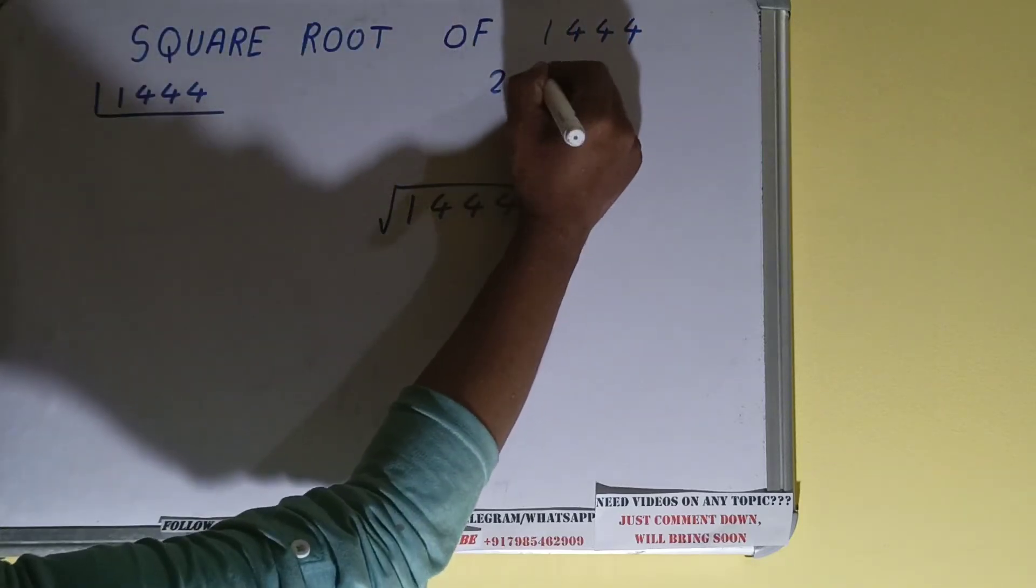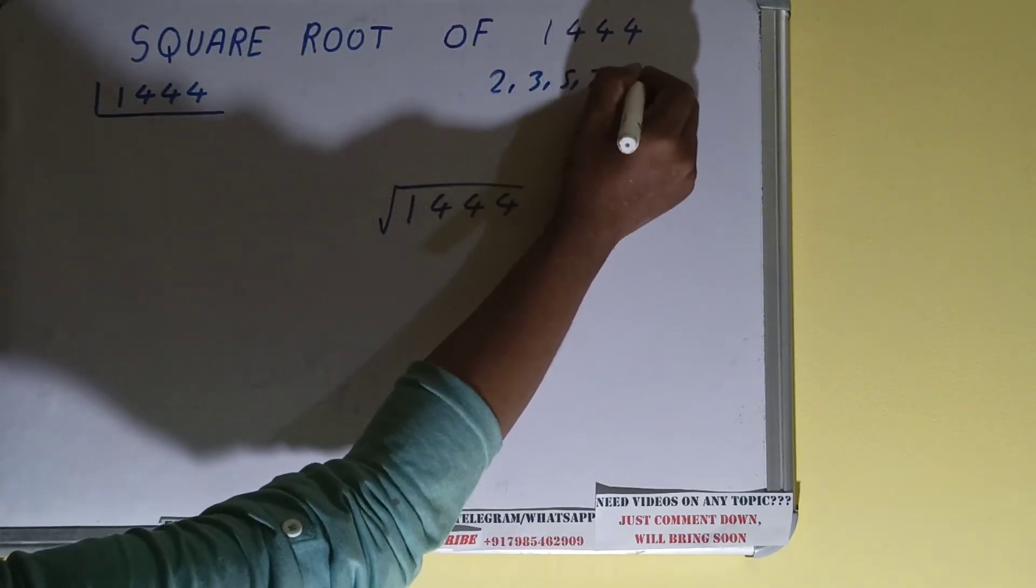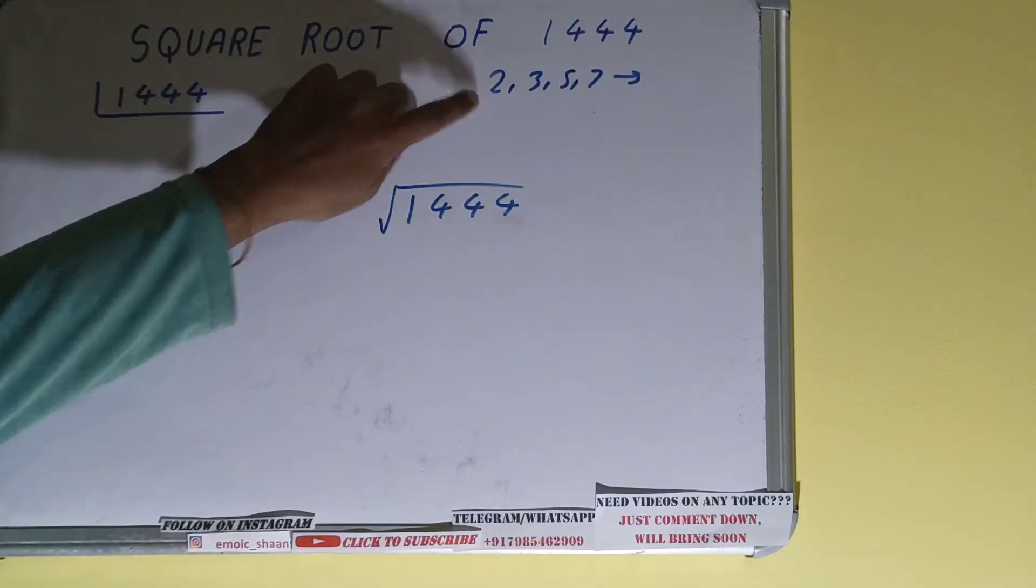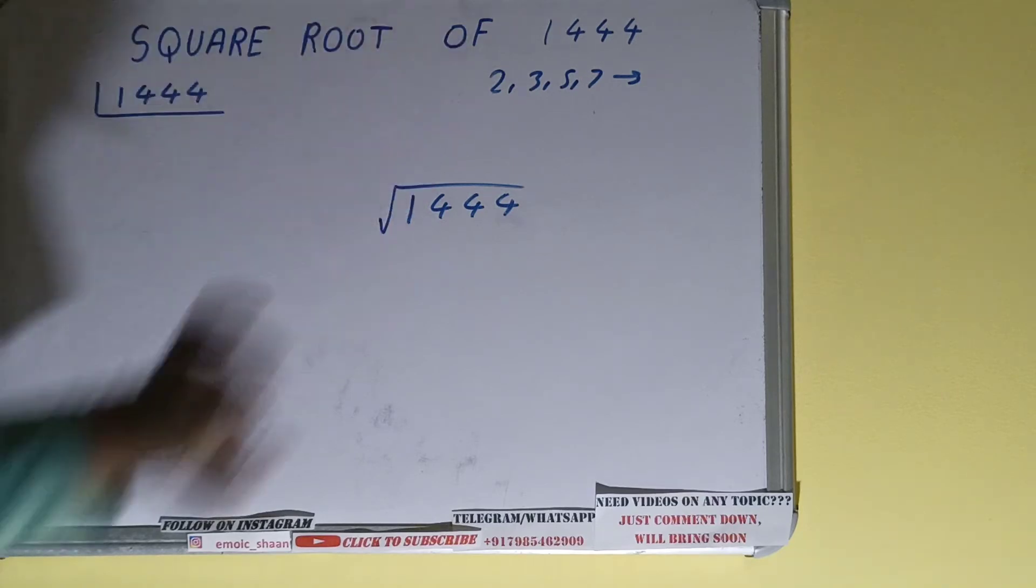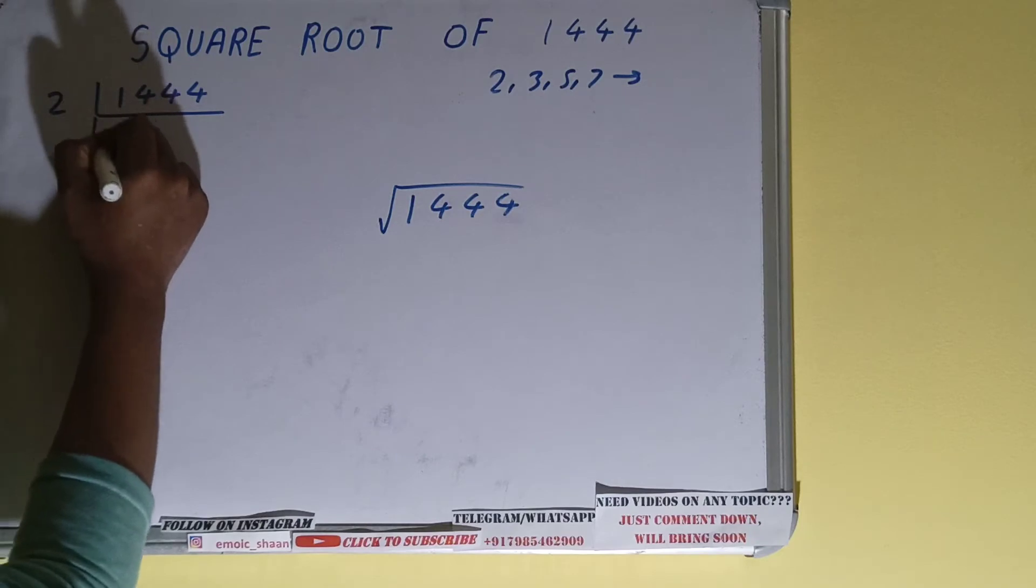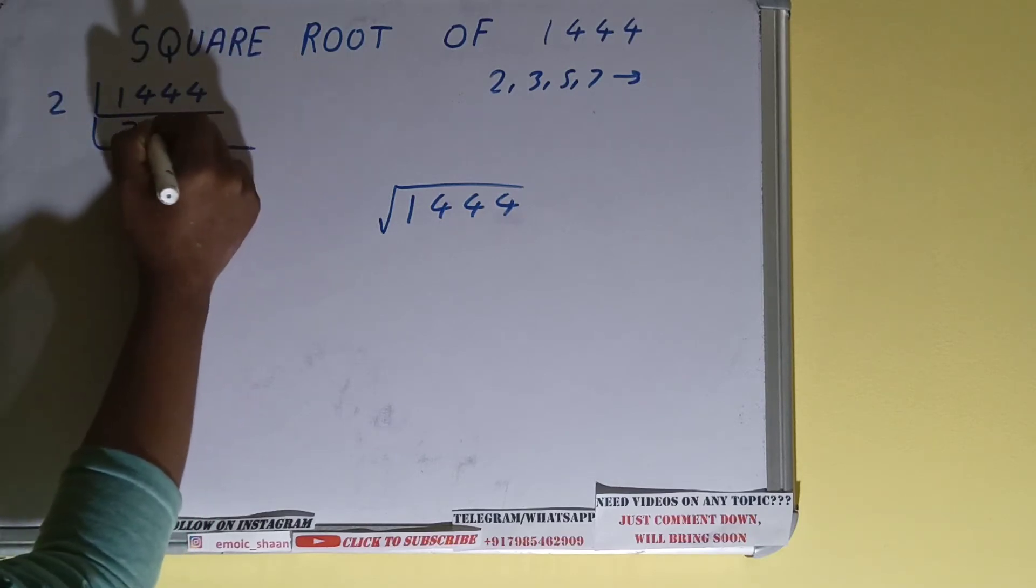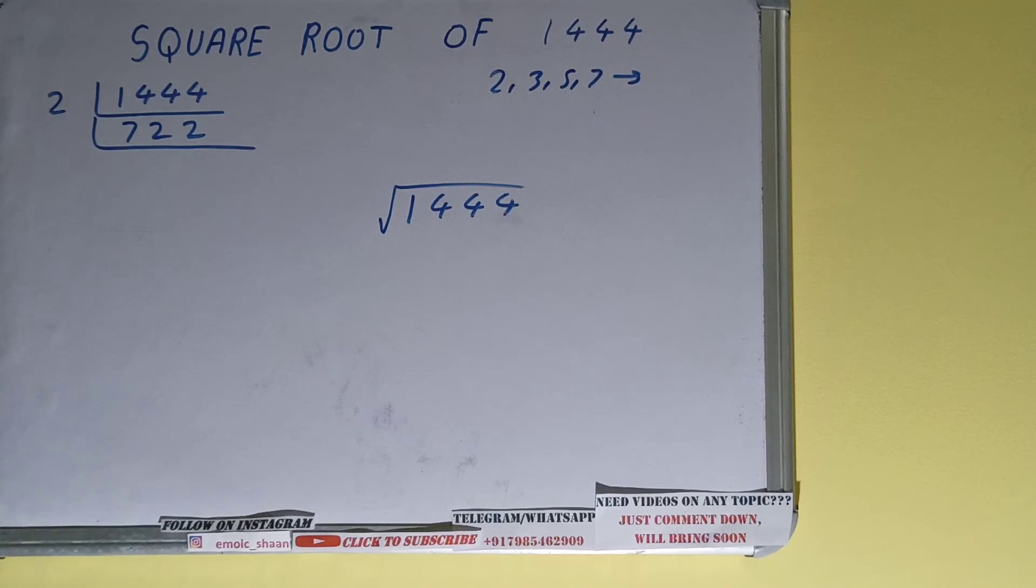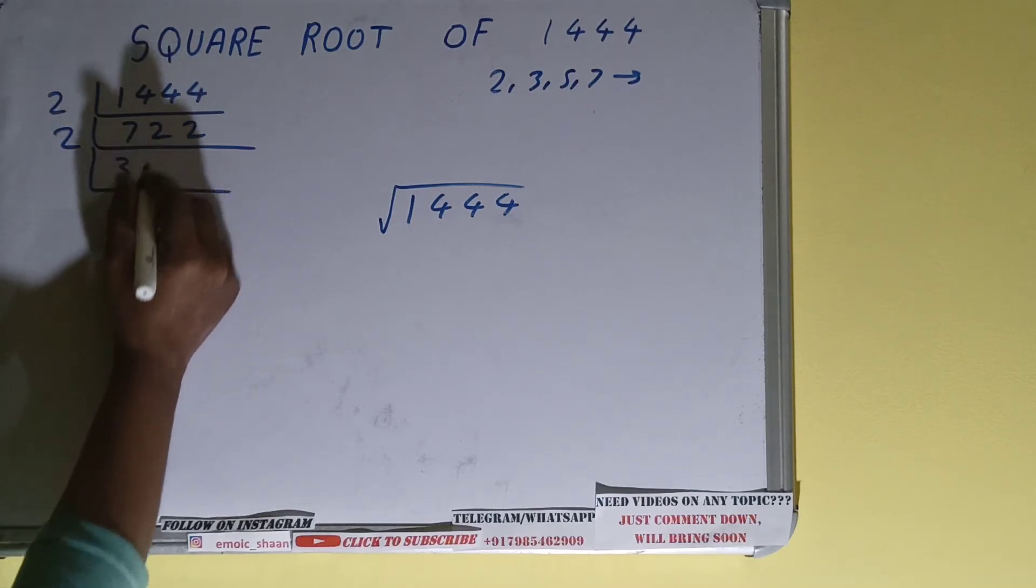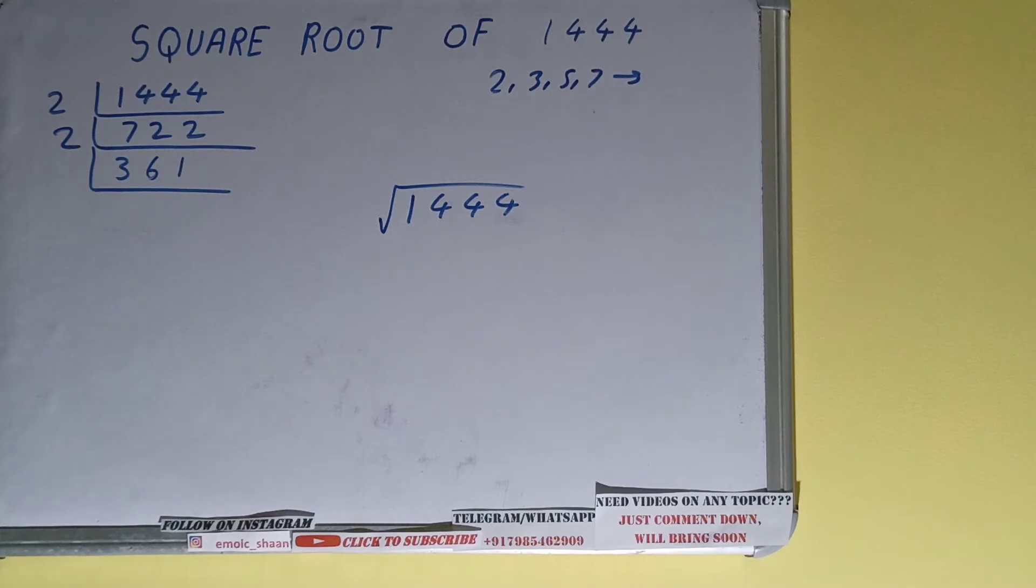We check with the lowest prime number we have. Is the number 1444 divisible by 2? Yes, it is because the number is even. So divide, you'll be having 722. Again, is this 722 divisible by 2? Yes, it is even, so divide it. Two threes is six, one two, two six is twelve and one, so you will be having 361.